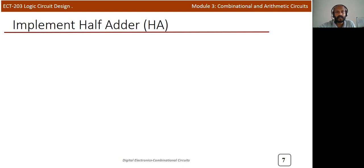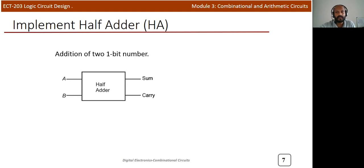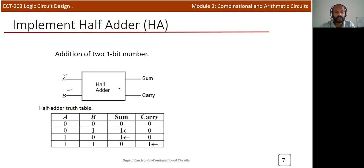Now we need to implement the half adder circuit. Following the normal procedure, first we write the truth table. We consider the half adder as a black box with two inputs A and B, and two outputs — sum and carry. From the previous explanation, A and B are the inputs. For 0,0: sum=0, carry=0; for 0,1: sum=1, carry=0; for 1,0: sum=1, carry=0; for 1,1: sum=0, carry=1. Now we need to design the circuit for sum and carry.